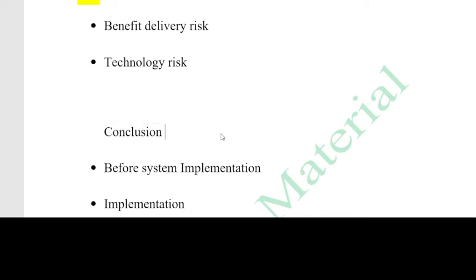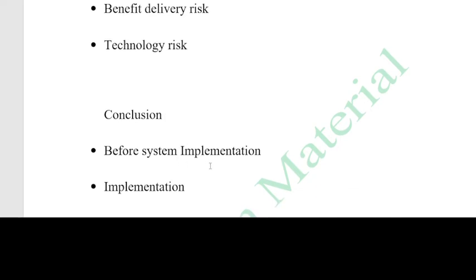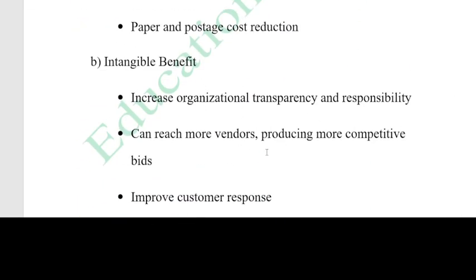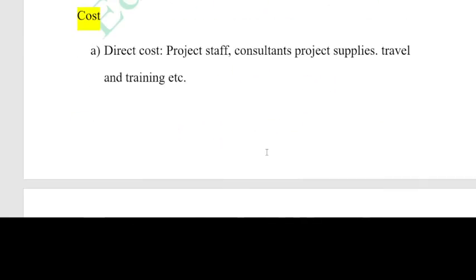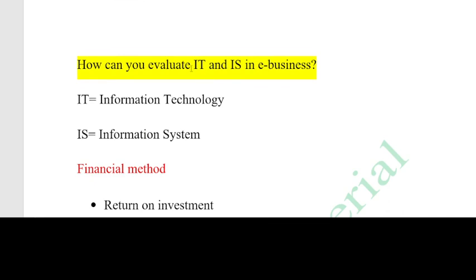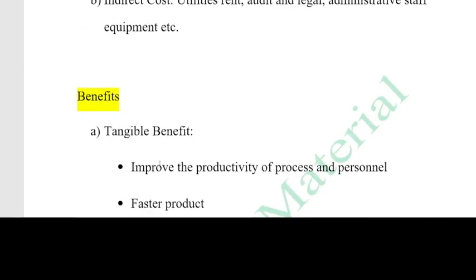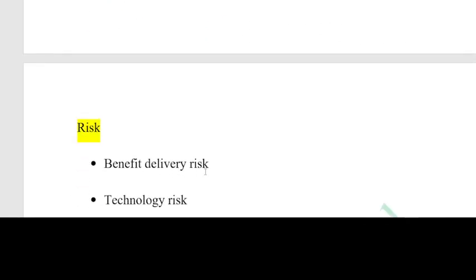In conclusion: when evaluating information technology using the financial method, you consider cost, benefit management — including direct and indirect costs — tangible and intangible benefits, benefit delivery risk, target return for investors, and technology risks such as security, privacy, and confidentiality — for example, hacking.